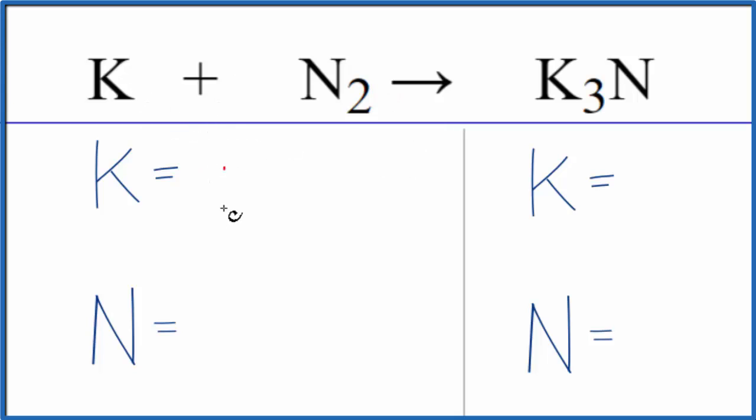We have one potassium atom, two nitrogen atoms, and then we have on the product side three potassium and just one nitrogen.